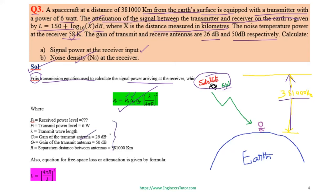The gain of the transmitting antenna is 26 dB, and the gain of the receiving antenna is 50 dB. R is the distance between the transmitting and receiving antennas. The free space loss or attenuation is also given by L = (4πR / λ)², where lambda is the wavelength of the signal.